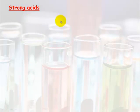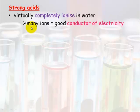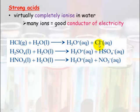So strong acids — let's have a look at a couple of examples. Strong acids virtually completely ionize in water, so they pretty much completely give away their protons. They produce many ions, which makes them good conductors of electricity. An example is hydrochloric acid: when put into water it virtually completely ionizes into H⁺, which forms hydronium with water, plus the Cl⁻ ion, the chloride ion.